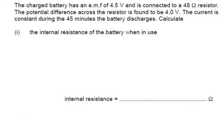The charged battery has an EMF of 4.5 volts. It's connected to a 48 ohm resistor. The potential difference across the resistor is found to be 4 volts. The current is constant during 45 minutes that the battery discharges. Calculate the internal resistance of the battery. So we've got EMF equals I big R plus I little r. Now we're looking for the internal resistance. We know that this is 4.5, this here is going to be 4, so therefore this is going to be 0.5.